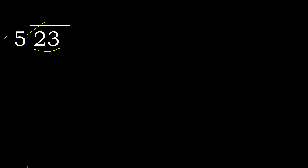5 multiplied by 5 is 25, which is greater. 5 multiplied by 4 is 20, which is not greater. 23 minus 20 is 3.